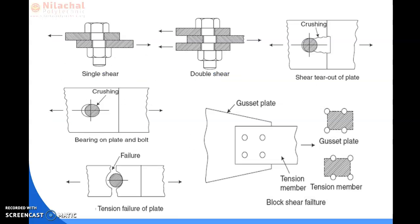Looking at the figures for single shear and double shear failure: in single shear failure, the shank and threaded portion of the bolt are not in a single line — they are deviated from their actual position. It is a lap joint with two main plates overlapping each other in a single-line bolted connection, but the alignment of the bolt section is not properly in one line.